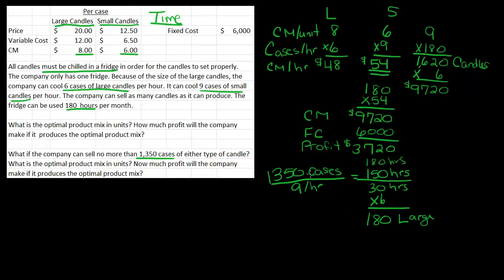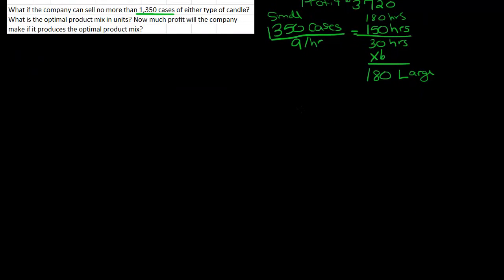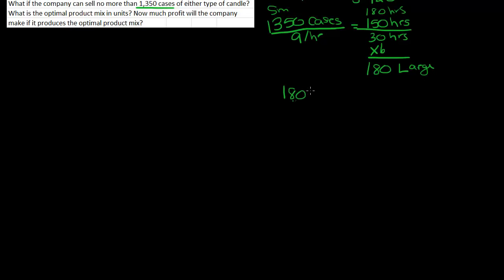So that means I'm going to make 1,350 cases of small, and 180 cases of large. So let's get some more room here, and let's figure out what our profit would be if we made this mix instead. I've got 180 large, and I've got 1,350 small.